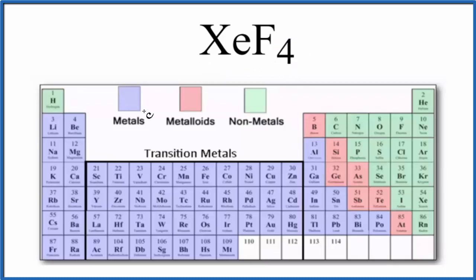So if we look at the periodic table divided into metals, metalloids, and nonmetals, we find xenon over here. Here's xenon. It's a noble gas. And then we have fluorine. So we have two nonmetals.